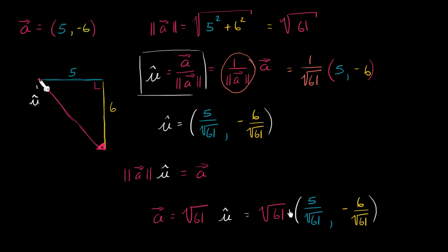If you multiply the scalar, you're going to multiply it times each of these components, you're going to be left with 5 comma negative 6.